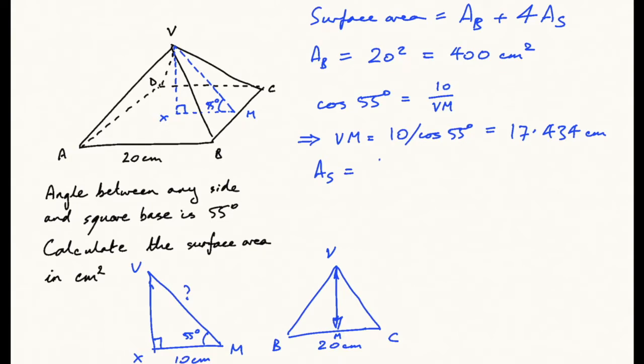is going to be half base times height—half the base is half times 20 times VM, which is 17.434. So that's 10 times that, giving us 174.34 centimeters squared.